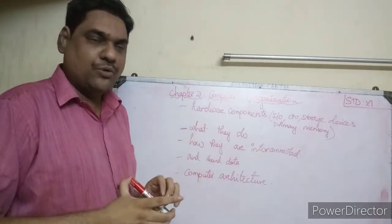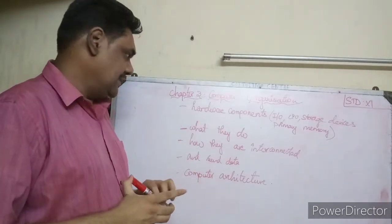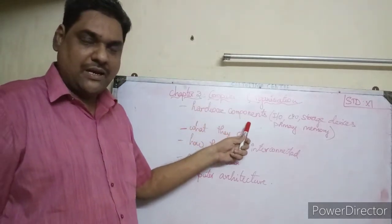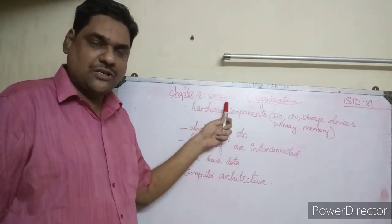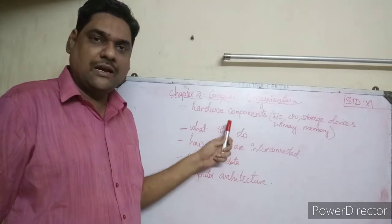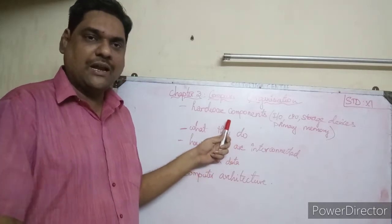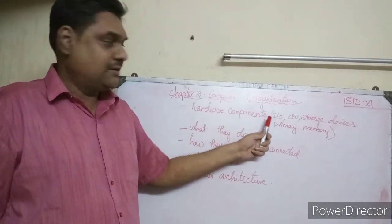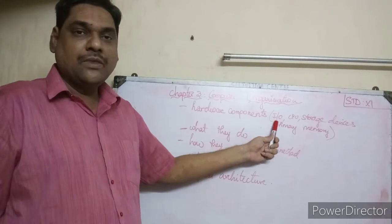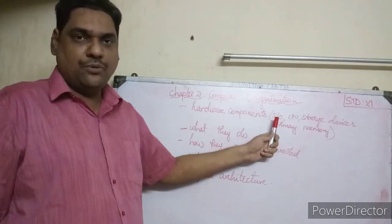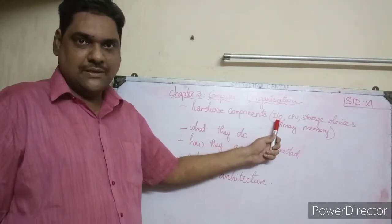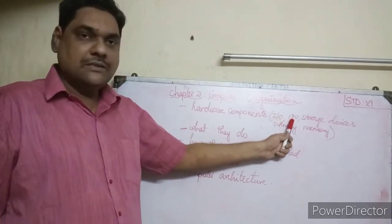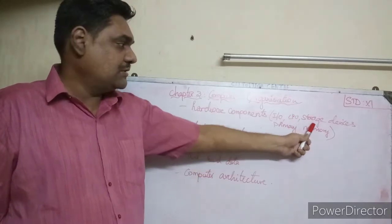Computer organization deals with how the hardware components are connected. The hardware components include input/output devices and the CPU, which stands for Central Processing Unit.